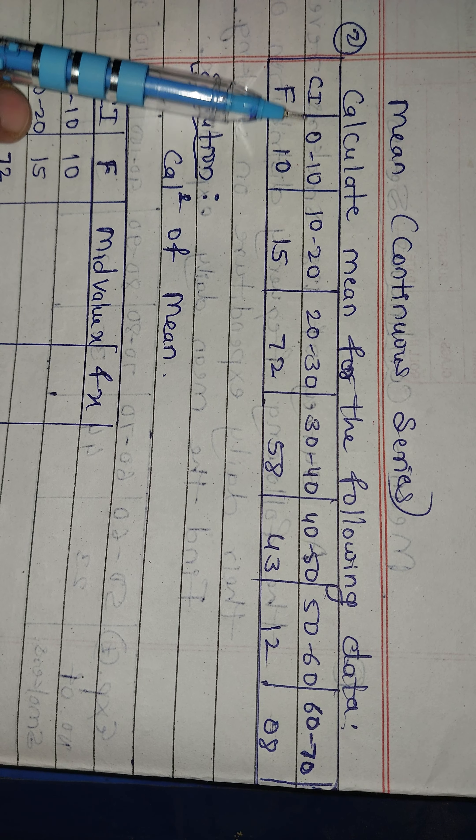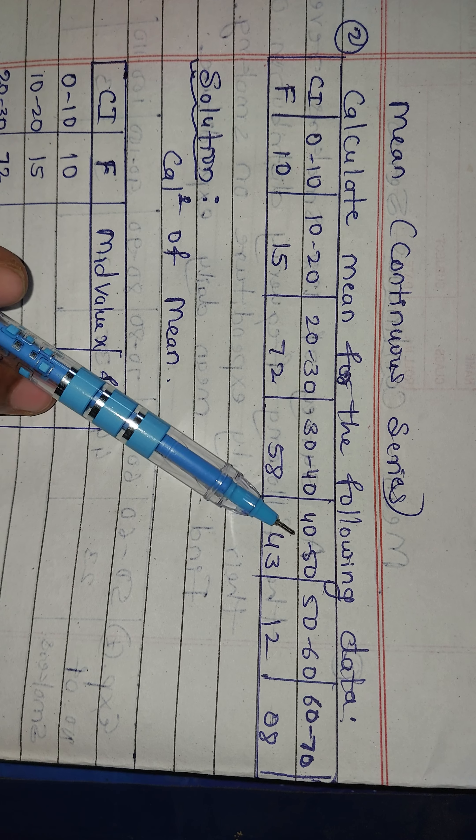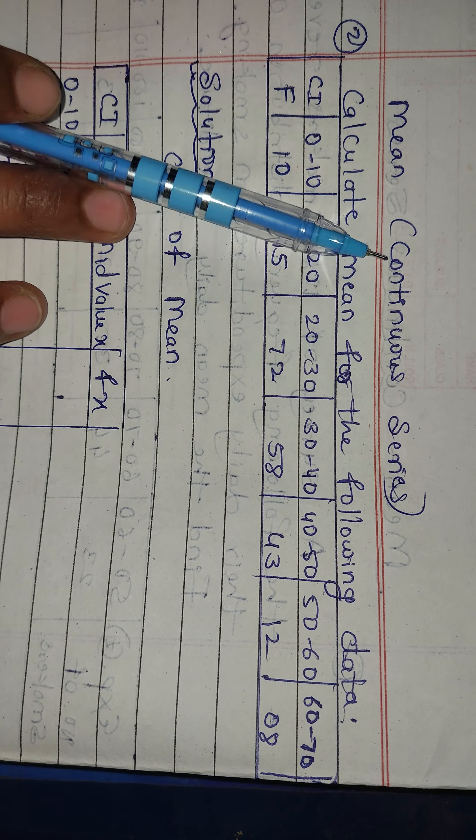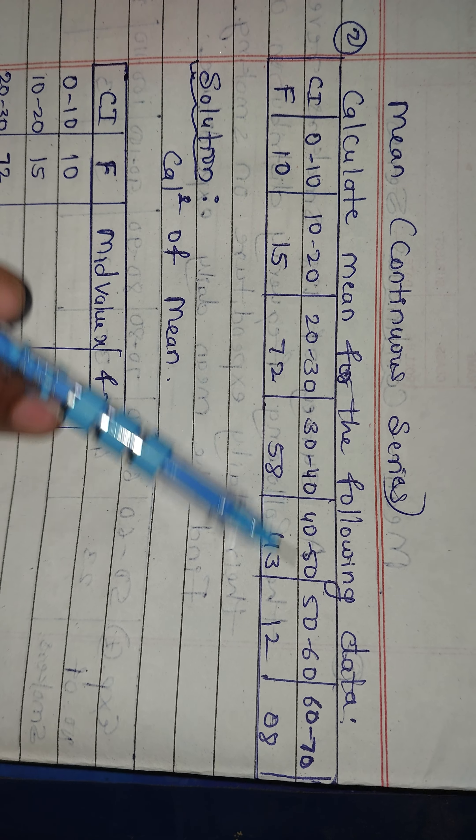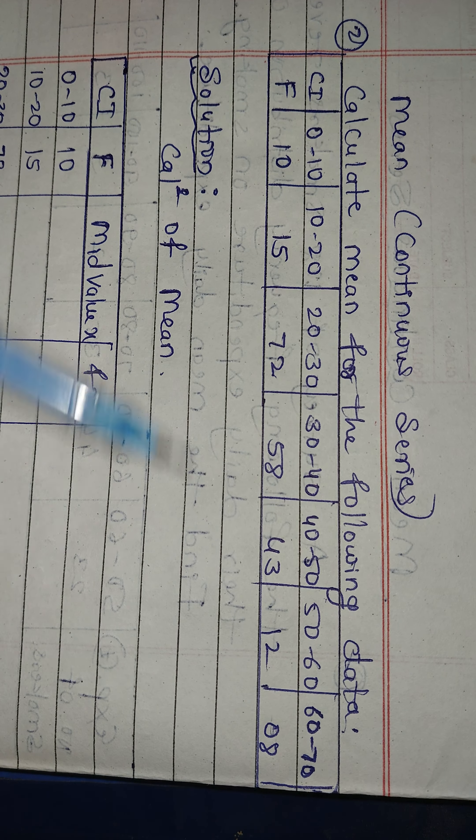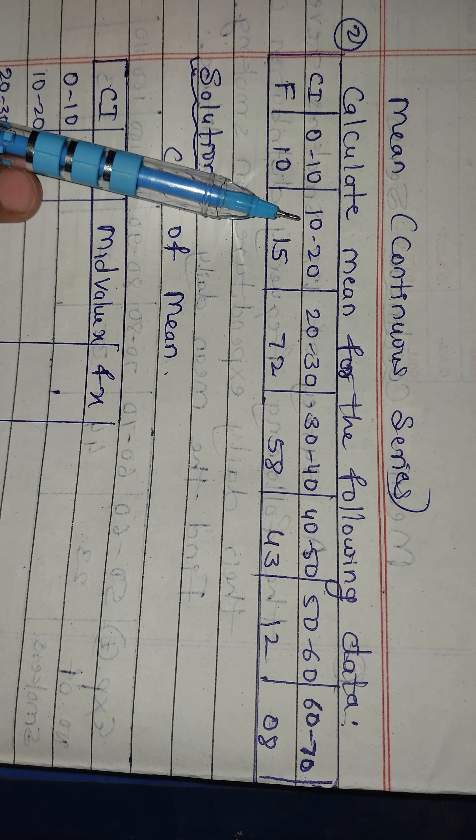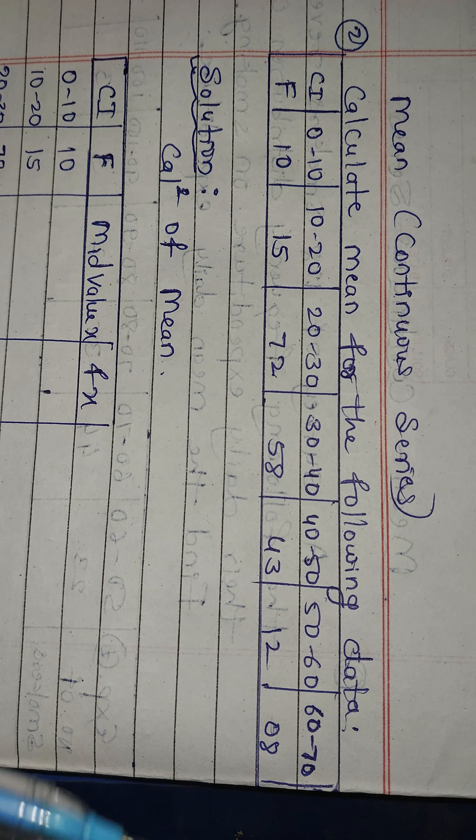Class intervals are 0 to 10, 10 to 20, 20 to 30, 30 to 40, 40 to 50, 50 to 60, 60 to 70. This is a record of continuous series, so values are continuous. Frequencies available: 0 to 10 has 10 values, 10 to 20 has 15 values, 20 to 30 has 72, and so on.